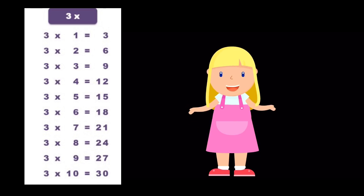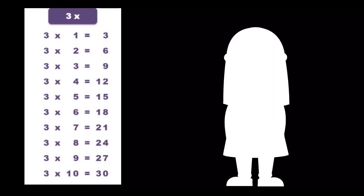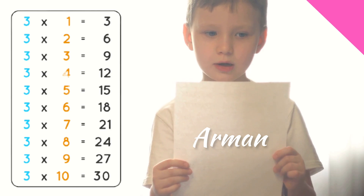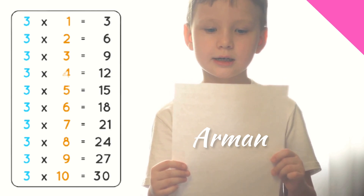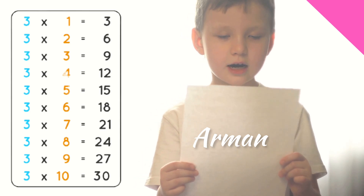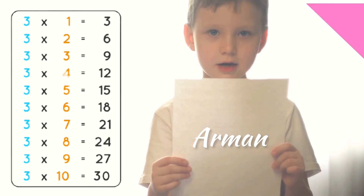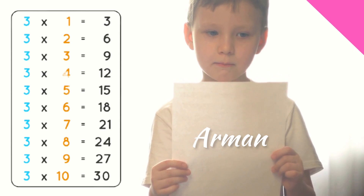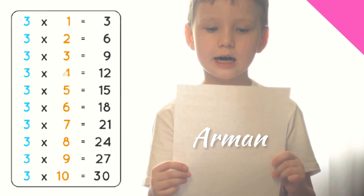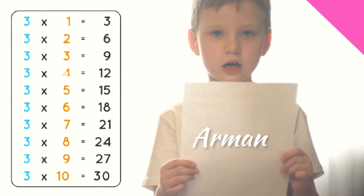Three sixes are eighteen. Three sevens are twenty-one. Three eights are twenty-four. Three nines are twenty-seven. Three tens are thirty.